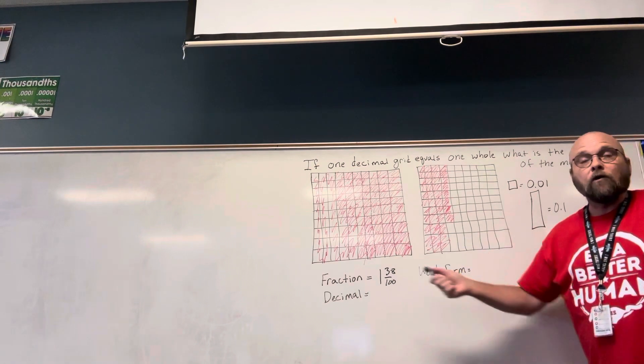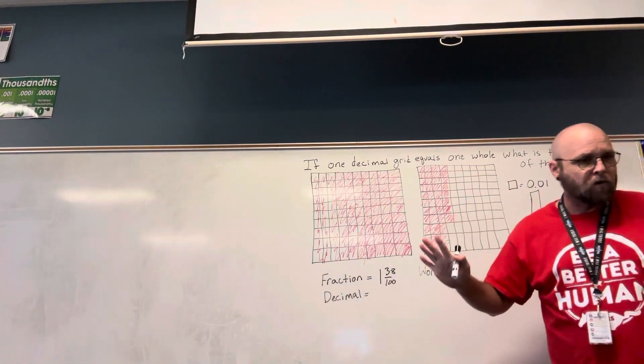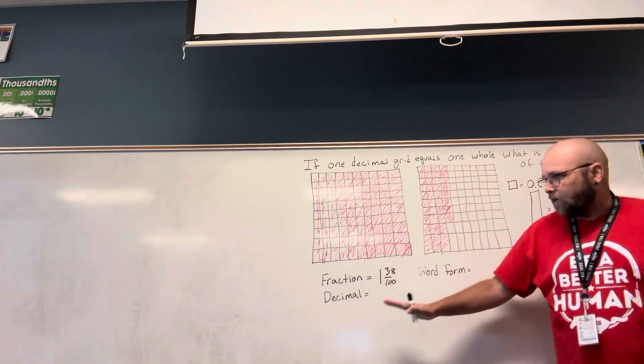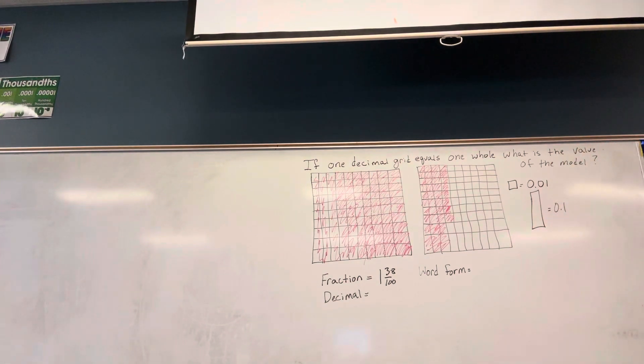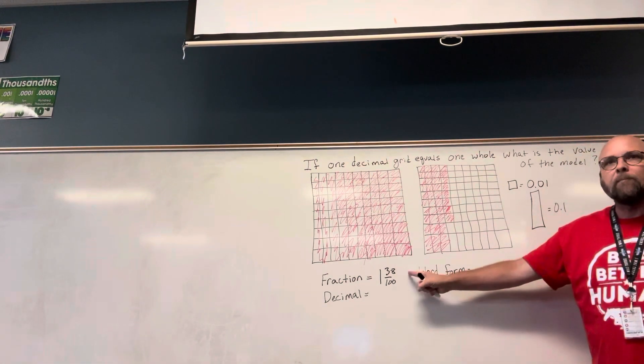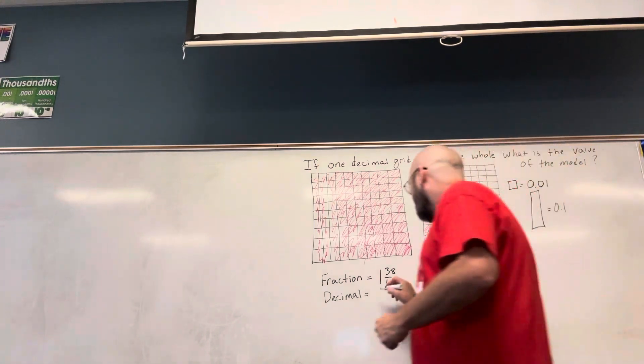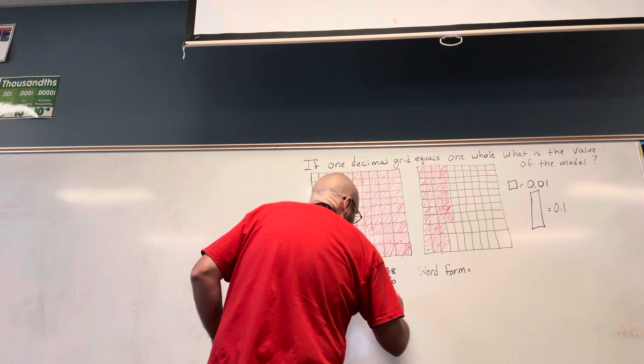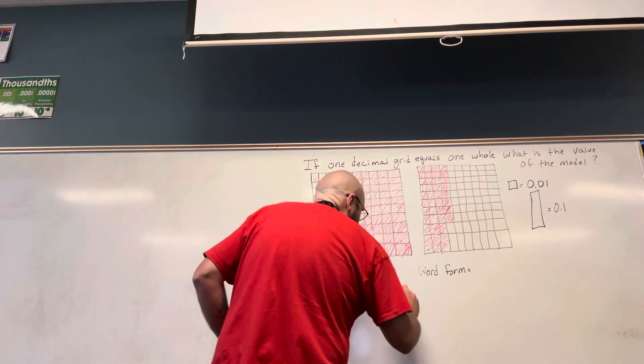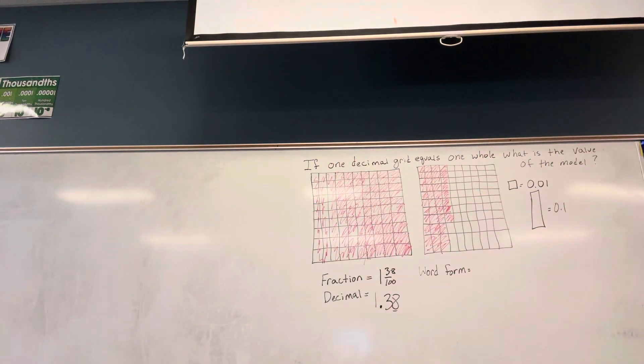Now, if I want to write this as a decimal, and this is really helpful for the first problem, I want to write something that is pronounced and said the same way. So, one and thirty-eight hundredths. The eight needs to be in the hundredths place, so it is pronounced the same way. This fraction and this decimal are pronounced the same way: one and thirty-eight hundredths.